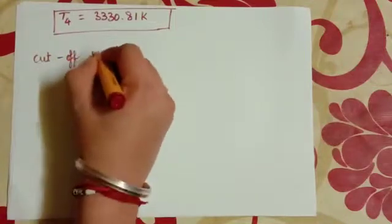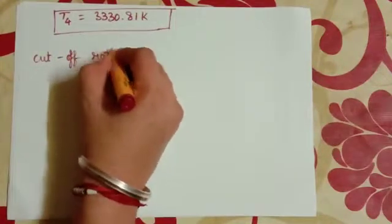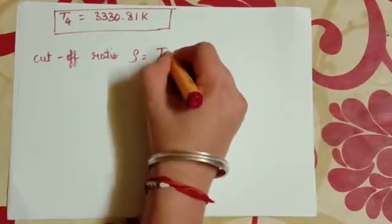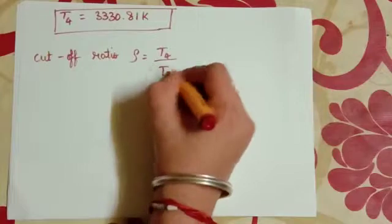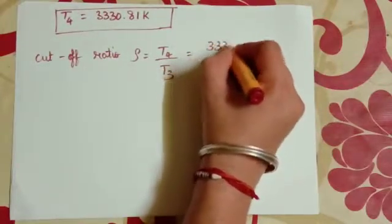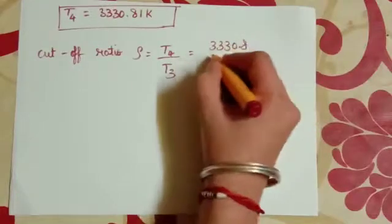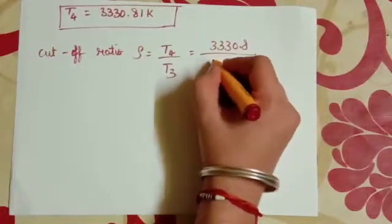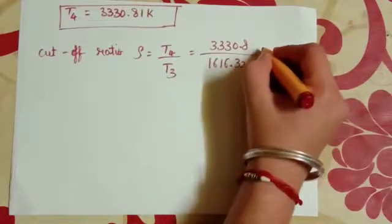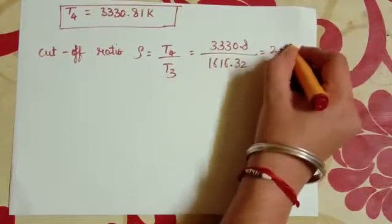Cut-off ratio rho is equal to T4 by T3, which is 3330.8 divided by 1616.32, that is 2.06.